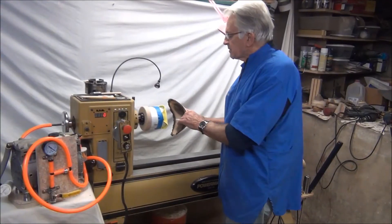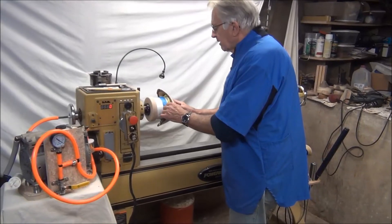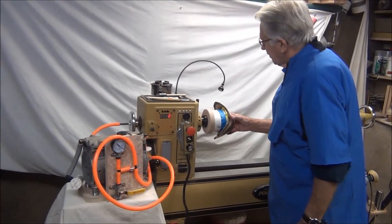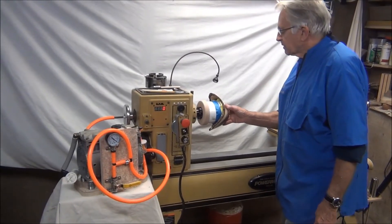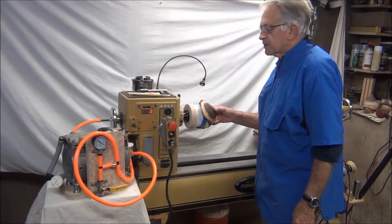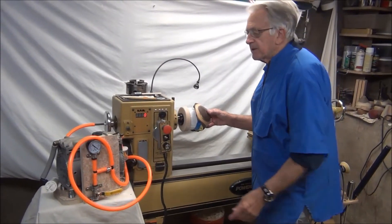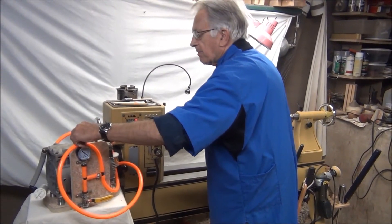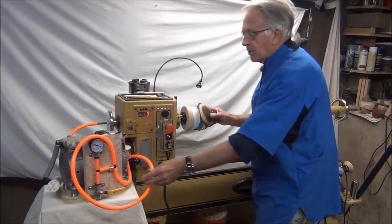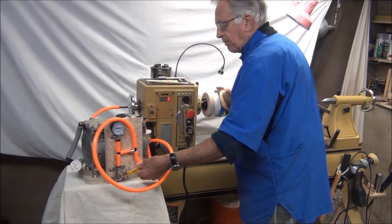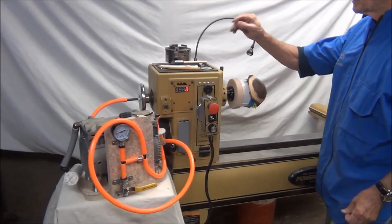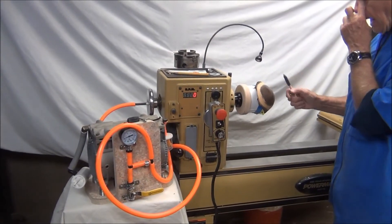The advantages of the system: you'll never get that natural edge bowl to be caught with cole jaws, which you definitely can chuck with a vacuum chuck. I'll press it in there to get it.